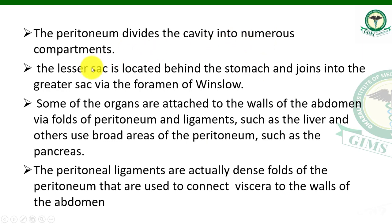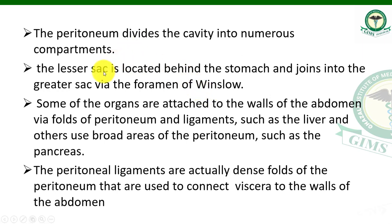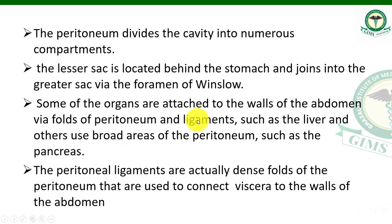The peritoneal cavity is divided into two compartments: the lesser sac — located behind the stomach — and the greater sac, joined together by the foramen of Winslow. Some organs are attached to the wall of the abdomen by peritoneal folds and ligaments, such as the liver, which has a broad area. Structures like the pancreas and liver are attached to the wall, with the pancreas being a broad area organ covered by peritoneum and ligaments.